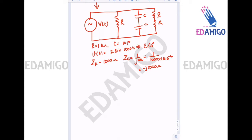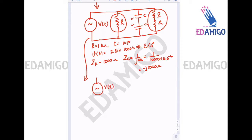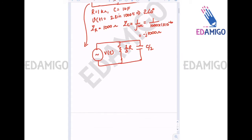If we redraw the circuit again, we can see that the two resistances are in parallel and the two capacitances are in series. So the total resistance is R parallel with 2R, which equals (2/3)R, and the series capacitance becomes C/2.